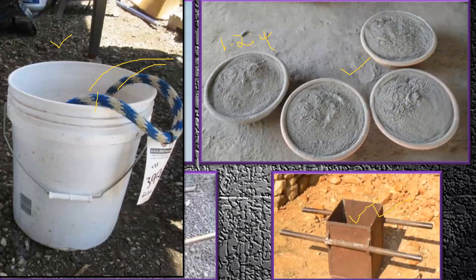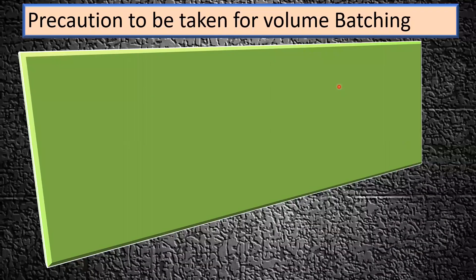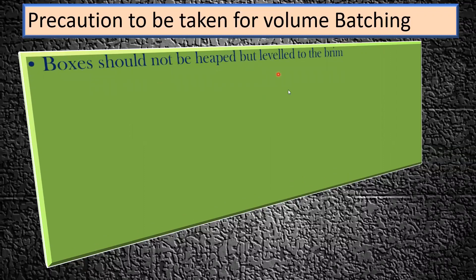For small construction, volume batching is acceptable. But for bigger construction, we always try to go for weight batching. In the next lecture we will see what weight batching is and why it is more important for larger projects compared to volumetric batching.